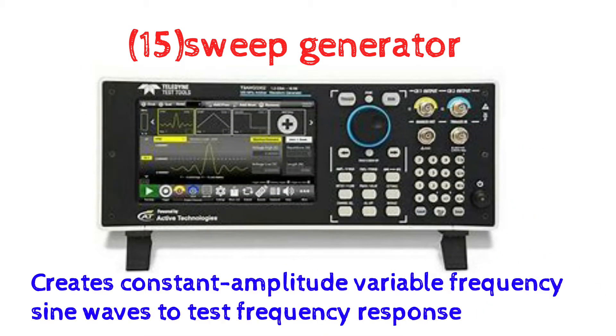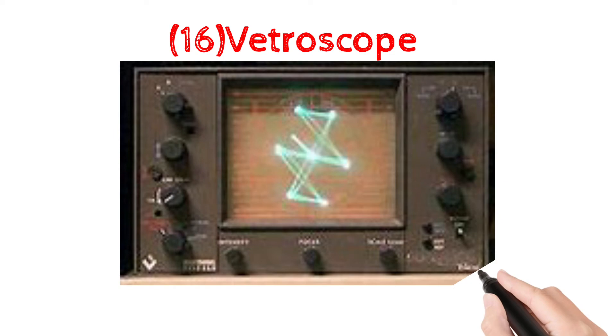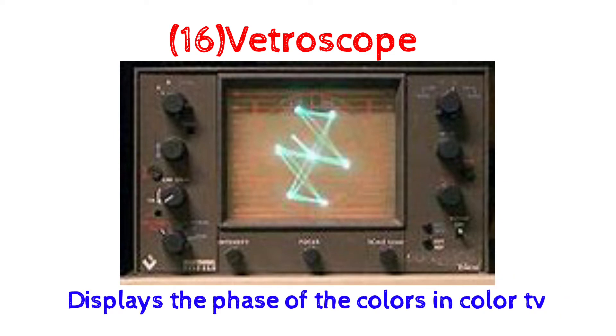15. Sweep frequency generator: creates constant amplitude, variable frequency sine waves to test frequency response. 16. Vectorscope: displays the phase of the colors in color TV.